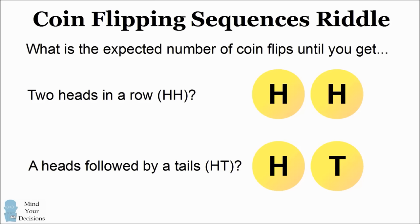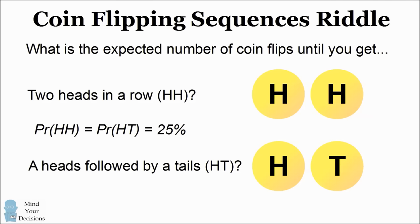At first glance, it would appear that these two questions would have the same answer. After all, if you flip a coin two times, the probability of getting HH is exactly equal to the probability of getting HT, which is 25%. But that's the puzzling part. The expected number of coin flips for HT and HH are not the same. Let's try and understand why.